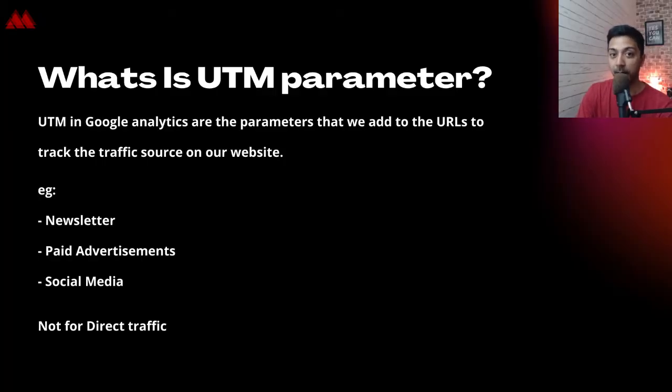For that same reason, to make tracking a little bit better, we use UTM parameters. No matter if you are doing paid advertisement, backlinking, or different organic ways to get traffic, it's very important to understand where exactly this traffic is coming from, so you will know which platforms are bringing more traffic and which ones need improvement. UTM parameters are added to our website URL to track the traffic source. It could be a newsletter, a paid advertisement, or a link on social media. However, it won't work for actual direct traffic where someone types your URL directly in the browser.